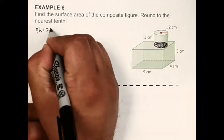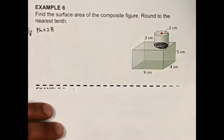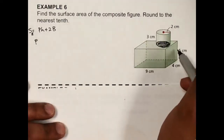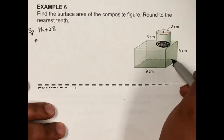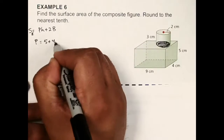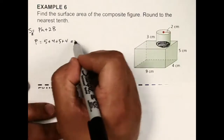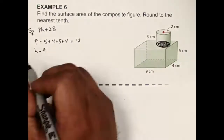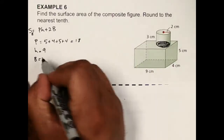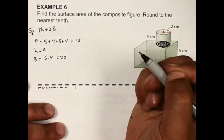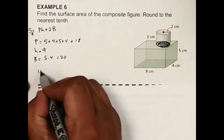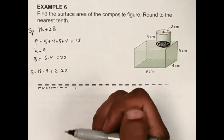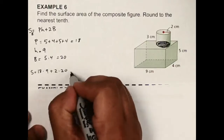Let's do the rectangular prism first using pH plus 2B. The perimeter of the base is 5 plus 4 plus 5 plus 4, which is 18. The height is 9. The area of the base is 5 times 4, which is 20. So substituting: 18 times 9 plus 2 times 20, which comes out to be 202.